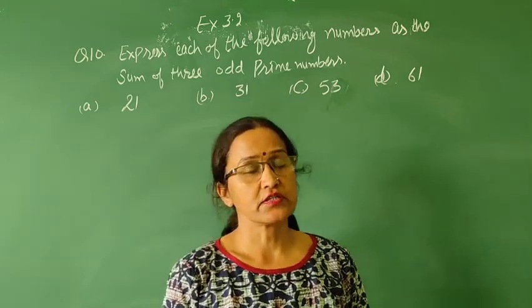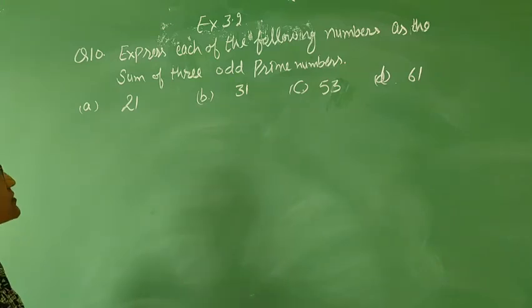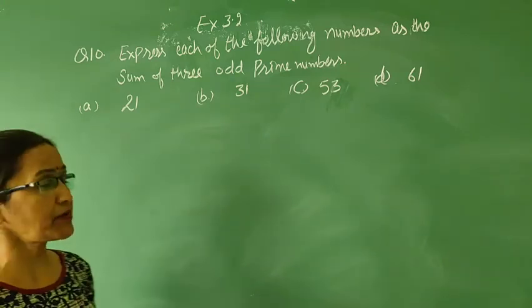Next question, question number 10 of exercise 3.2. The question is, express each of the following numbers as the sum of three odd prime numbers.